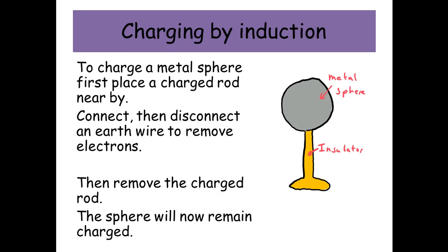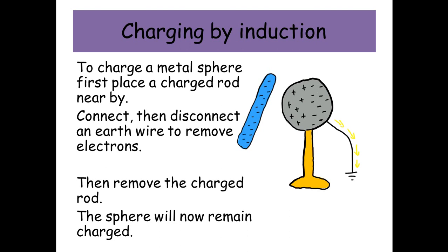Charging by induction. To charge a metal sphere, you first place a charged rod nearby. You then connect and then disconnect an earth wire to remove the electrons. So you place the negatively charged rod near the sphere. The electrons on the sphere are repelled by the electrons in the rod. Then you connect the earth wire, and some of the electrons will migrate off through the earth wire. You then remove the earth wire and leave a positively charged sphere behind.